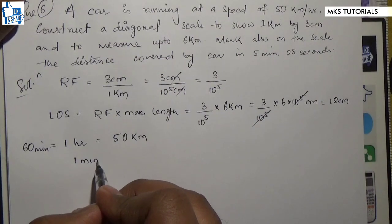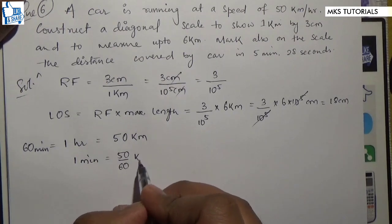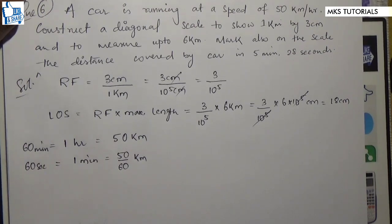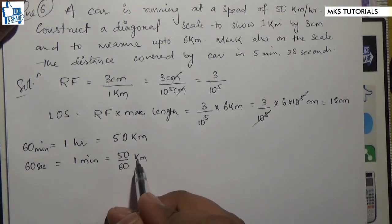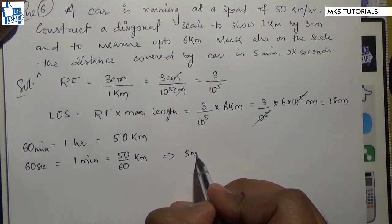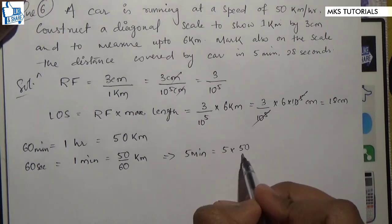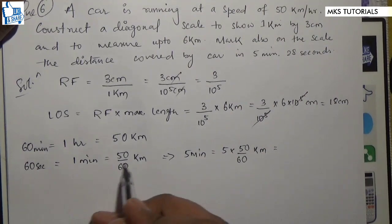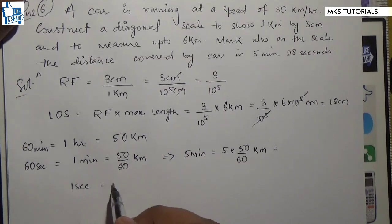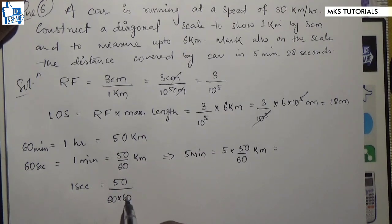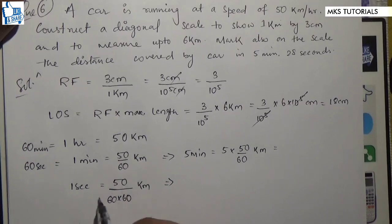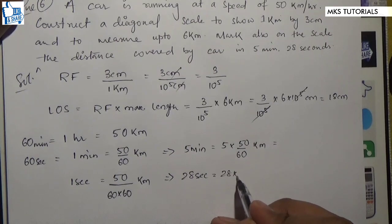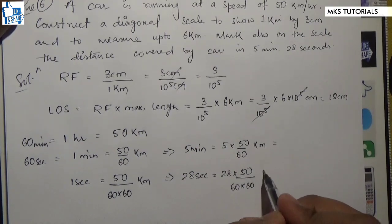So 1 minute is 50 by 60 kilometer. 60 seconds is 50 by 60 by 60 kilometer.